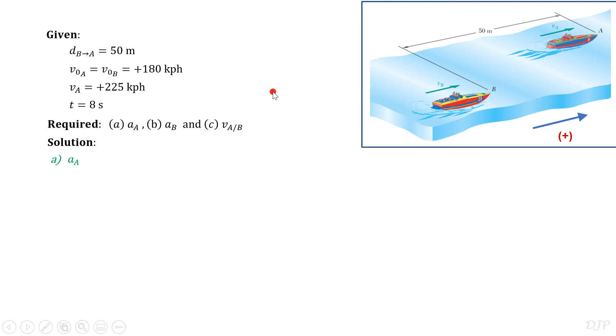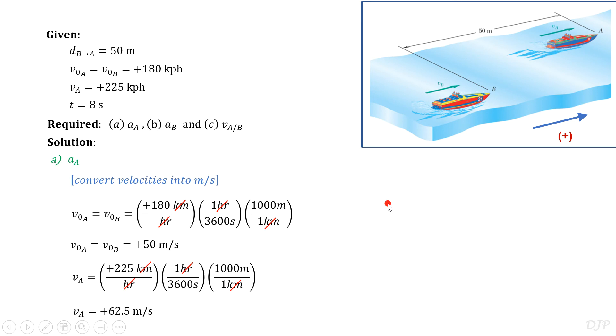Let's start with acceleration of boat A. For easy handling of units, let's convert all the given velocities into meters per second. This allows us to express their initial velocities equal to positive 50 meters per second. With the given time interval and initial and final velocities of boat A, we can now use this kinematic equation to get a sub A is equal to positive 1.563 meters per second square.